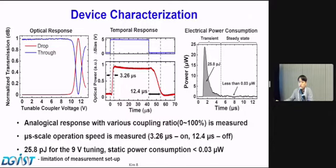For electrical power consumption, as our title suggests, this is ultra-low power. For 9-volt tuning, we only use 25.8 picojoules, and the steady power consumption is less than 0.03 microwatts. We actually expect that steady power consumption is much less than the recorded value because it is limited by the minimum measurement current of our instrument.